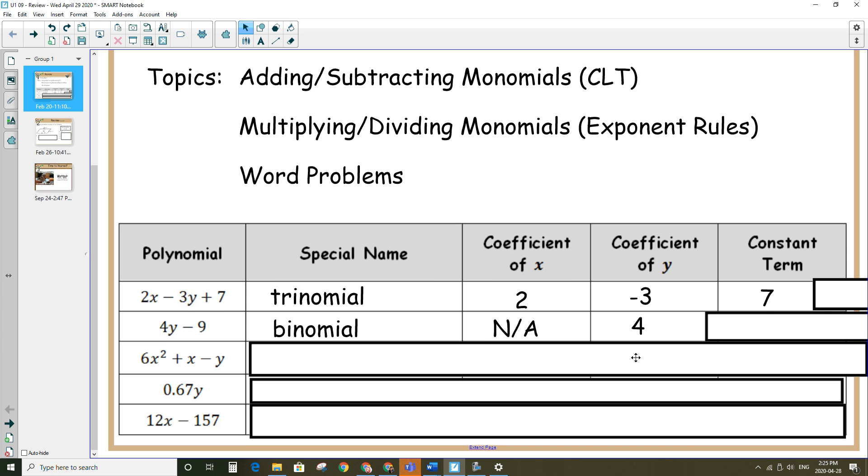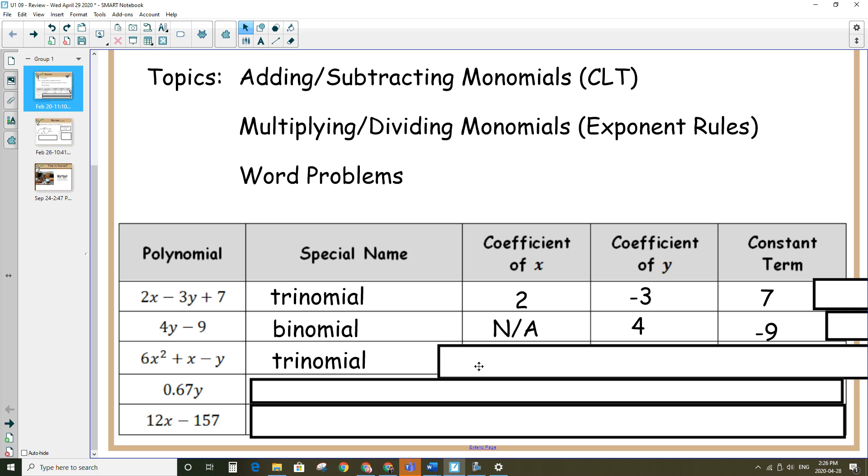Third example, this one has three different terms. It's also called the trinomial. Coefficient of x, the value in front of the x would be 1. Coefficient of y, we have a negative 1 in the front. And there is no constant term, so we're going to say not applicable again.